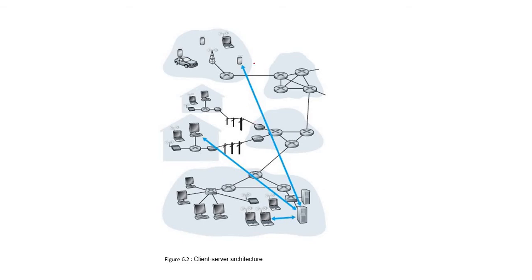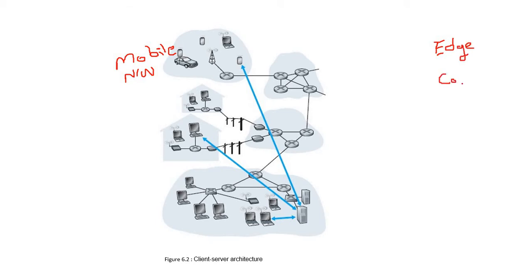In client-server architecture, the end systems located at any network — like our mobile network — whatever devices are located at the end system, we discussed network edge and network core. The systems at the boundaries are known as end systems. These are the clients — whether it's a smartphone or a laptop.